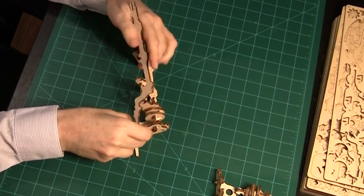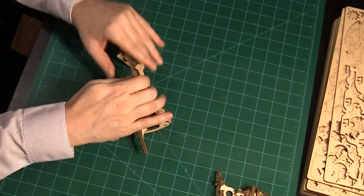The second vertical piece is attached on the other side, connecting to all of the horizontal pieces.